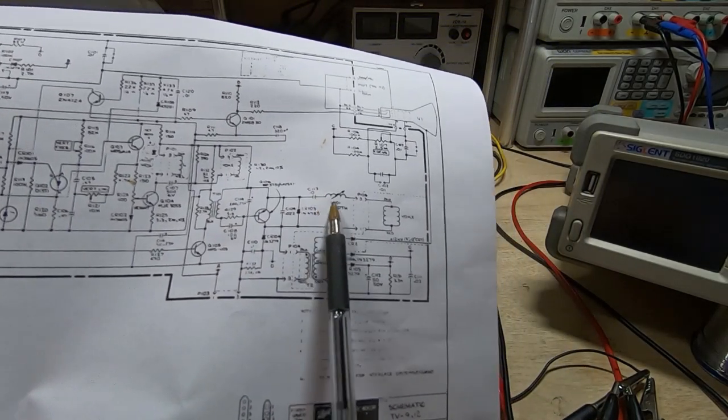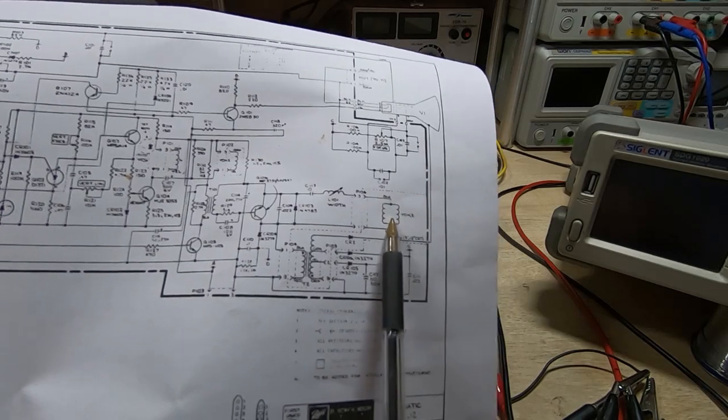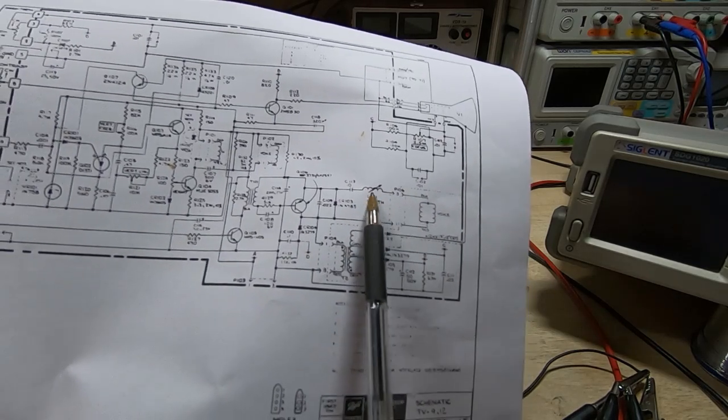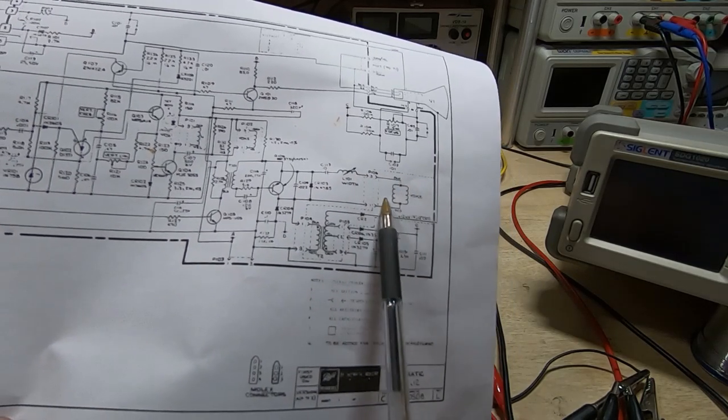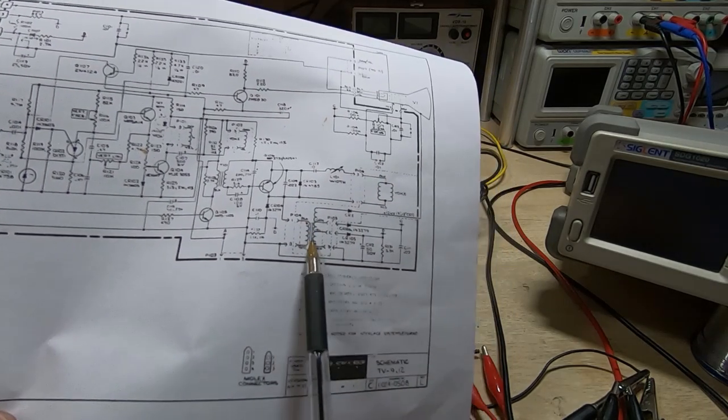The way this system works, there are three elements, well four if you include the capacitor, but there are three basic inductive elements: one's the line output transformer, one's the yoke, and one is the width control, which controls the toroid inductor we see sticking up off the board.